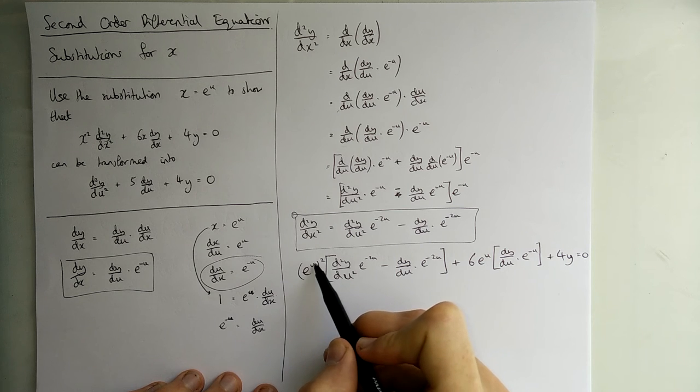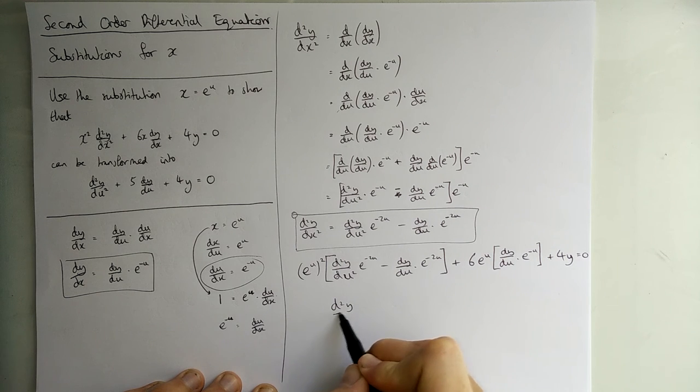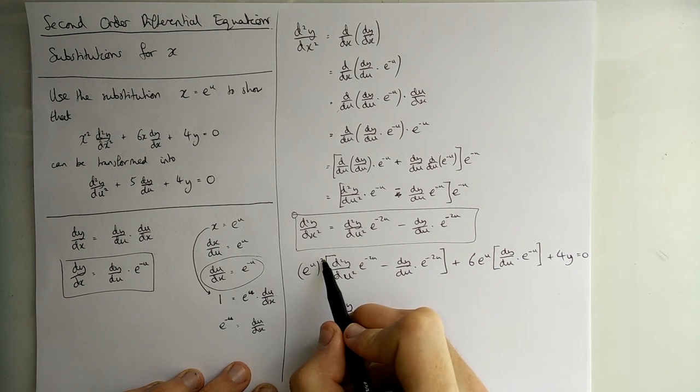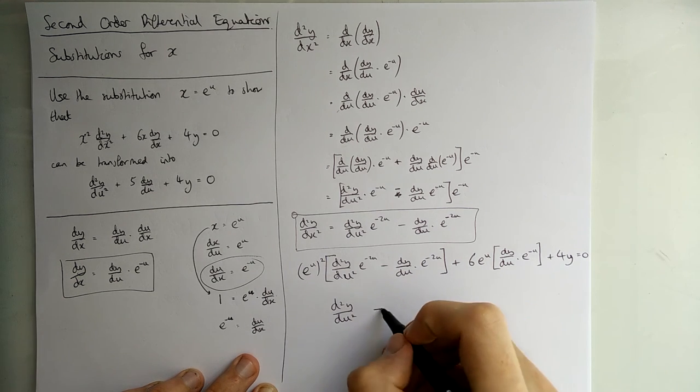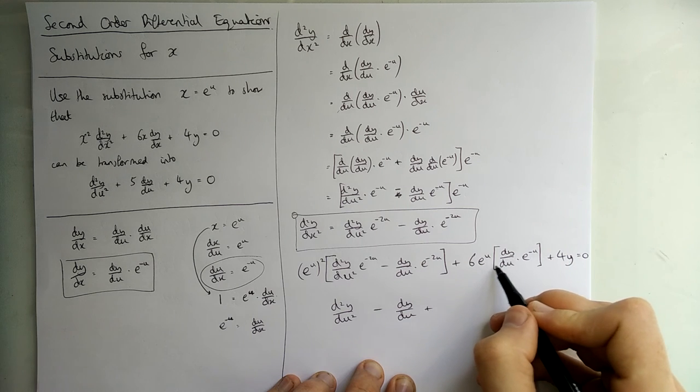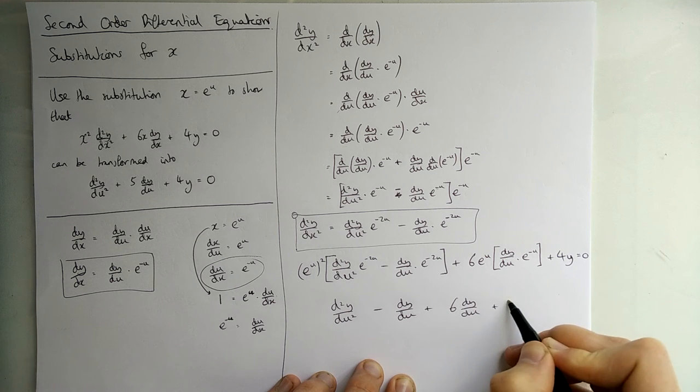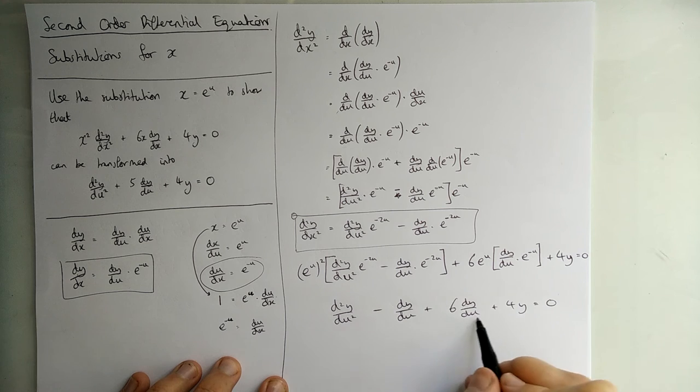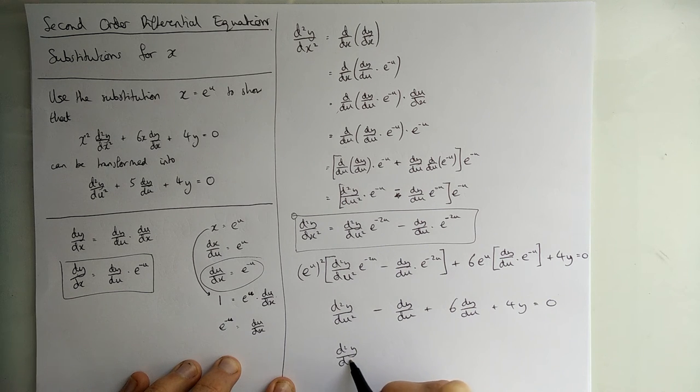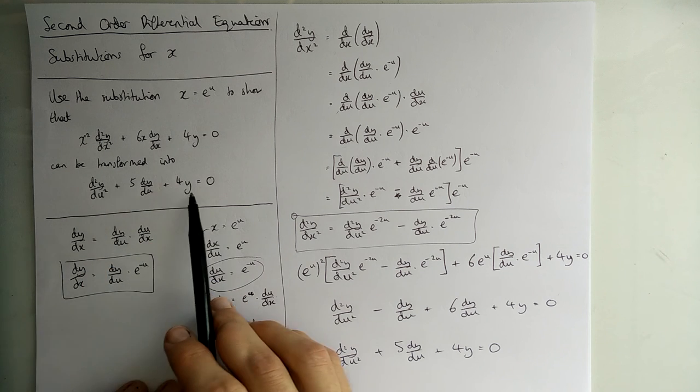And then something quite nice should happen. Here this is e to the 2u, which when we times it by e to the minus 2u, that cancels out. And we just get d²y/du². And then here e to the 2u times by e to the minus 2u is again 1, cancels out. We're left with minus dy/du. Here we have plus 6 lots of this, but e to the u and e to the minus u cancel out, so it's just 6 dy/du. And then here plus 4y. Okay, just tidy the last bit. We've got 5 there in the middle, I suppose. 6 minus 1. And that gives us the thing transformed into this.